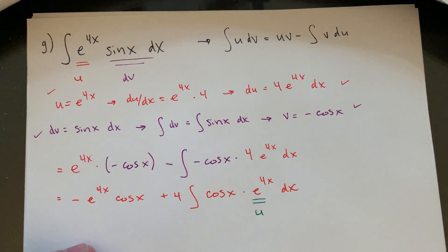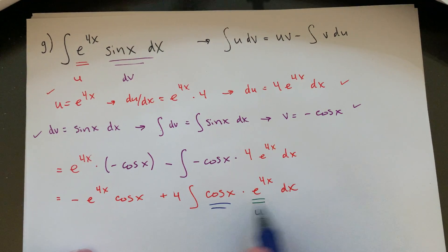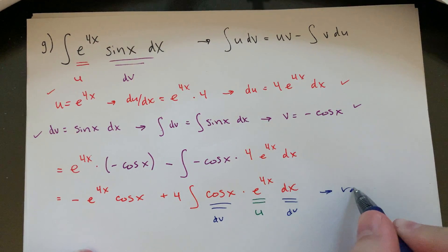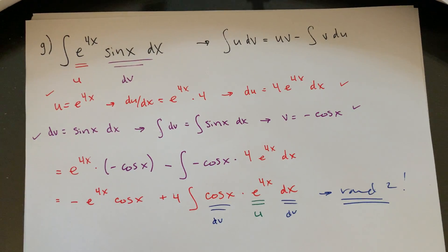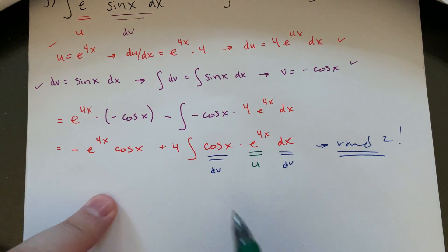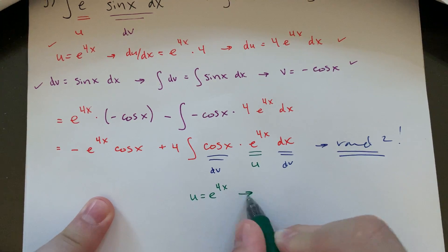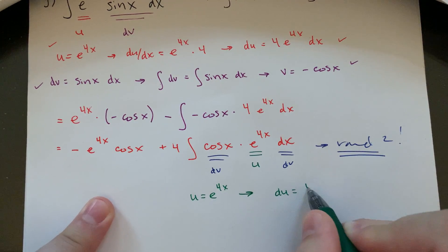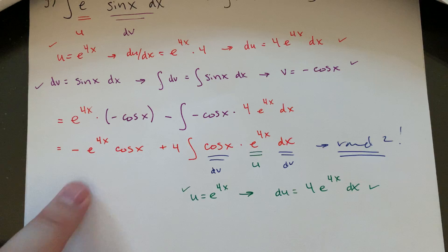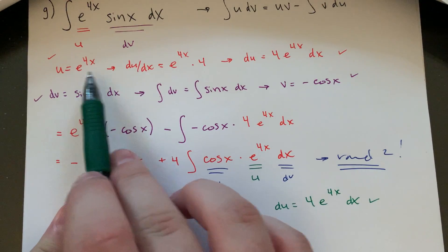Let's do e to the 4x is my u, and let's do cosine x dx is my dv. So this is round two. I'll shake this up. All right, so u is e to the 4x again, so that means du is going to be 4 e to the 4x dx. I'm jumping a step there a little bit just because we already did that. I'm going to end up in the exact same spot.